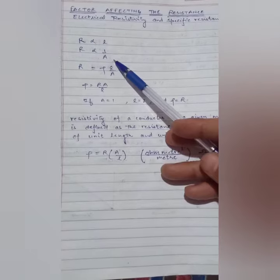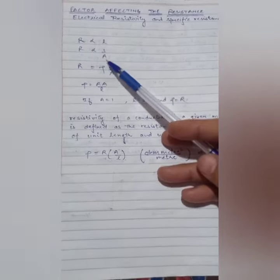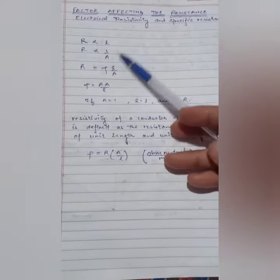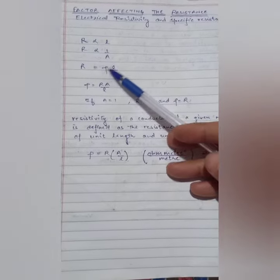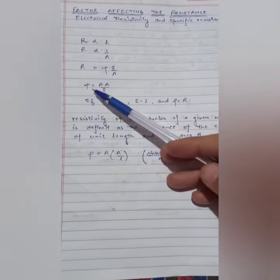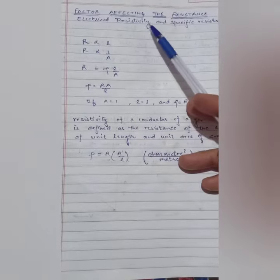So we can say that the resistance is directly proportional to the length and the resistance is inversely proportional to area. So from the combination of both the equations, R is equal to rho L upon A. Rho L upon A, so this rho is known as resistivity.